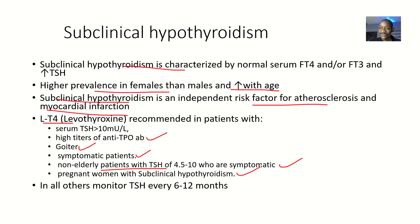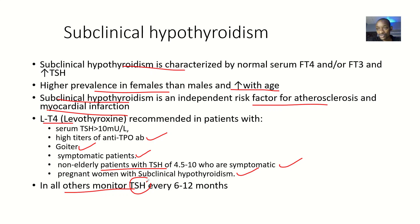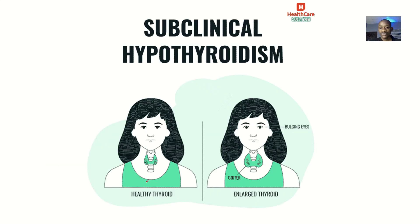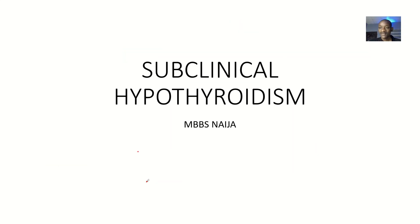LT4 is also indicated in pregnant women who have subclinical hypothyroidism. In all other cases of subclinical hypothyroidism, the approach is to monitor TSH every 6 to 12 months, because the condition is just starting. You don't jump to treatment — you observe for a while to see if it resolves on its own or progresses to overt hypothyroidism.